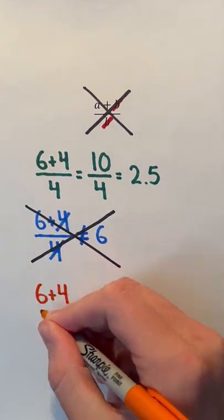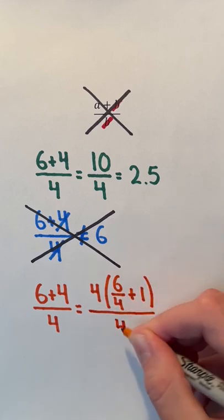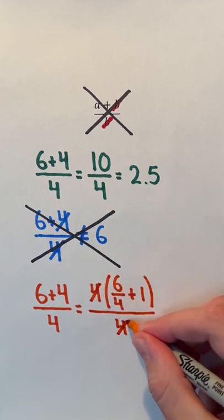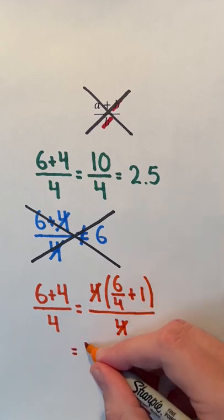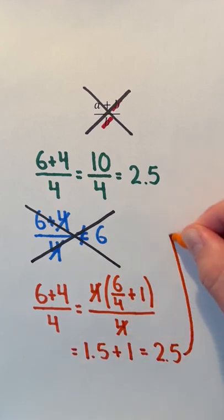If we factored out 4 from the numerator, we would have 4 times 6 over 4 plus 1 in the numerator. Then, the 4's can be crossed out. 6 over 4 is 1.5, and 1.5 plus 1 is 2.5, which is what we're supposed to get.